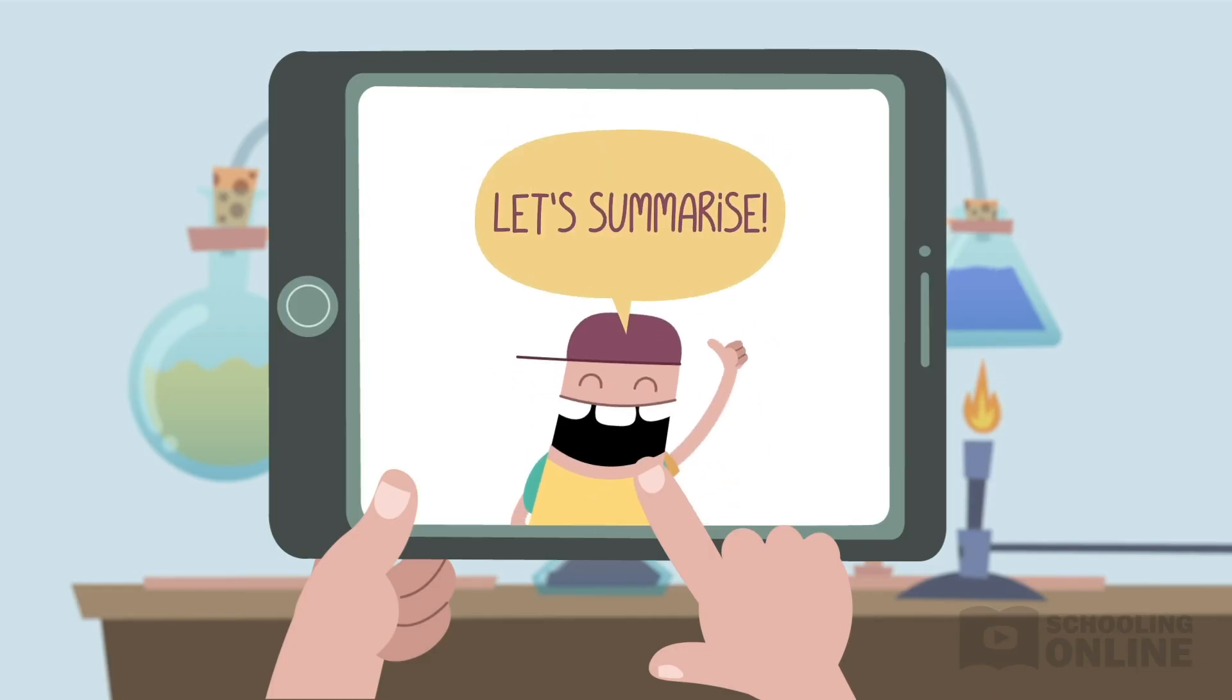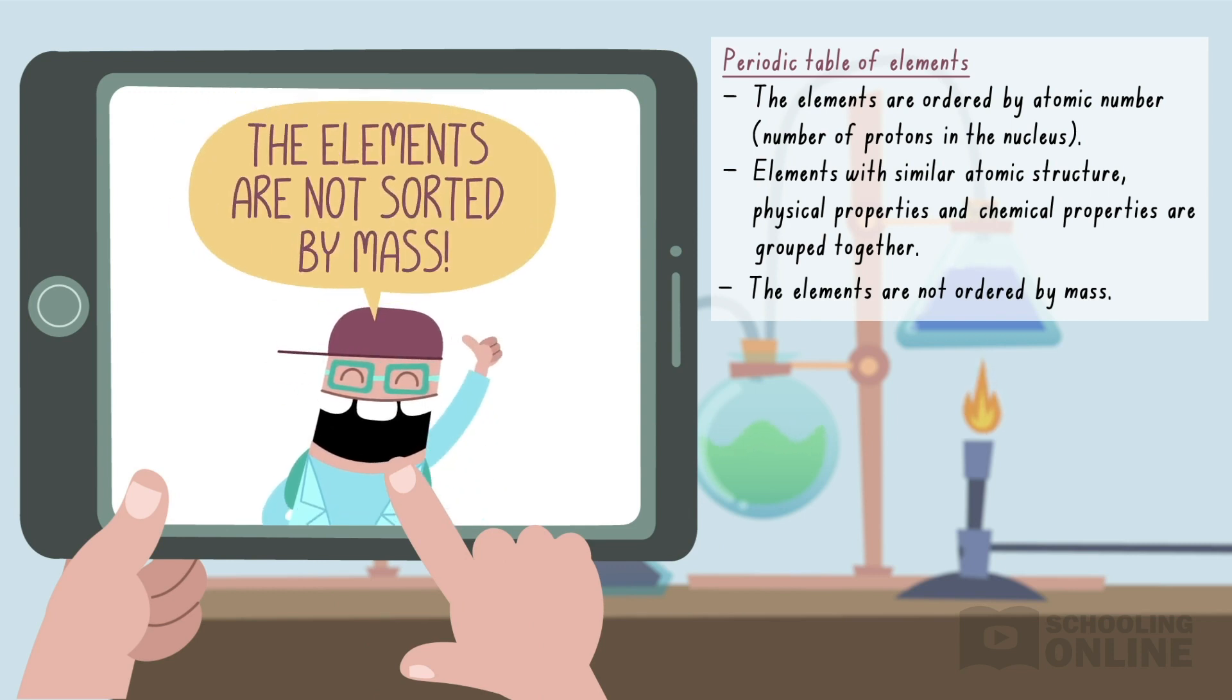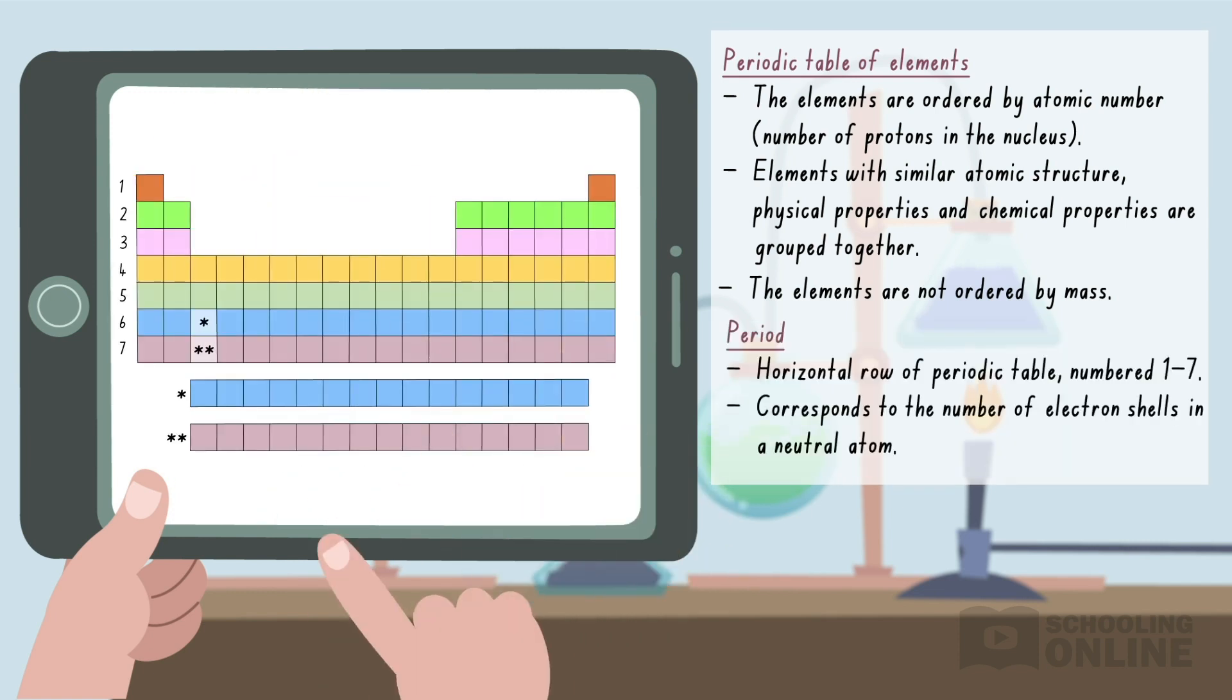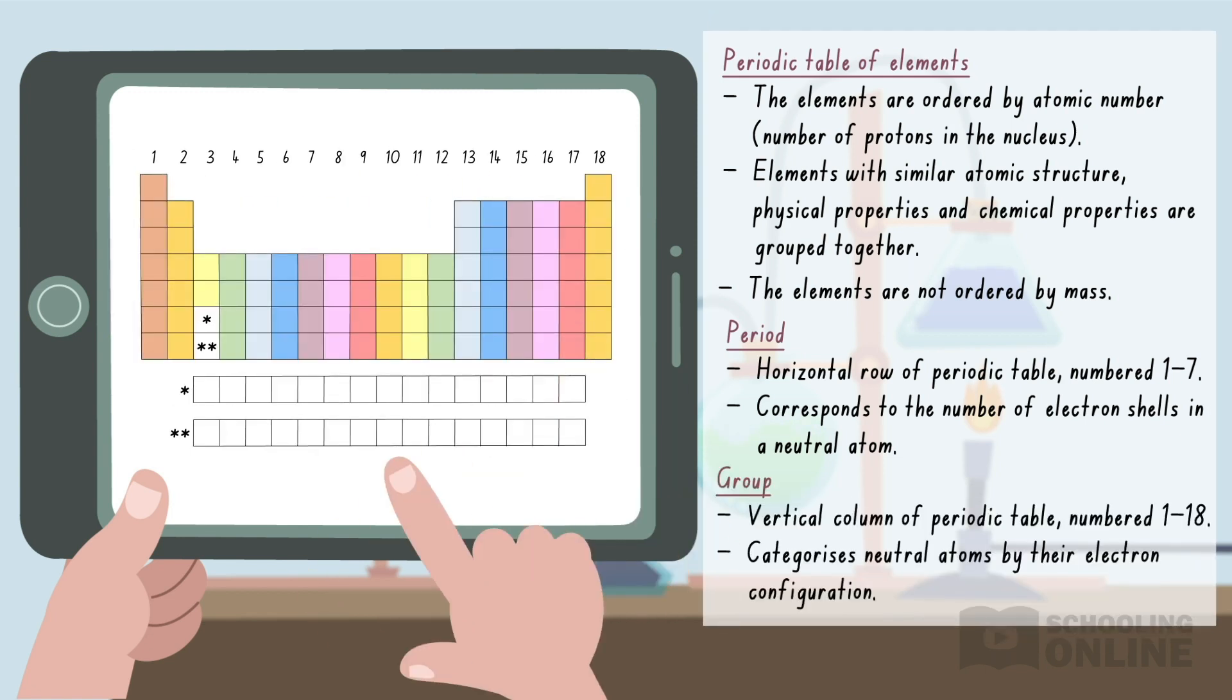Let's revise what we've covered in this lesson. In the HSC Chemistry course, you will need to read and identify patterns in the periodic table. The periodic table is a table of chemical elements arranged by atomic number, so that elements with similar atomic structure, physical properties and chemical properties are grouped together. The elements are not sorted by mass, because in some situations the heavier elements appear first. A period is a horizontal row of the periodic table. It corresponds to the number of electron shells in a neutral atom. On the other hand, a group is a vertical column of the periodic table. It categorises neutral atoms by their electron configuration.